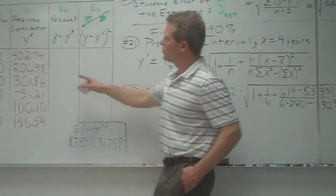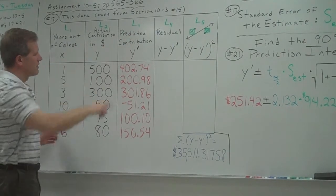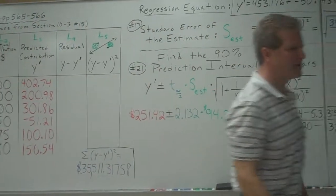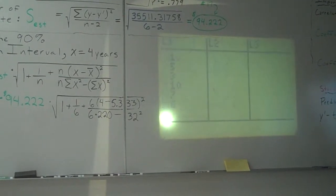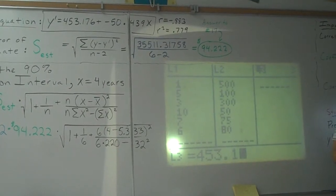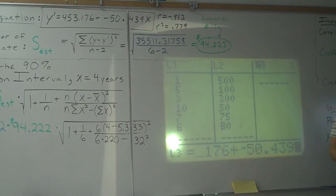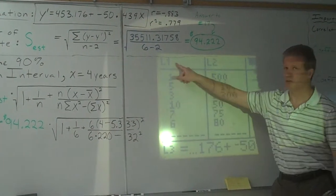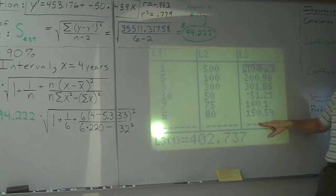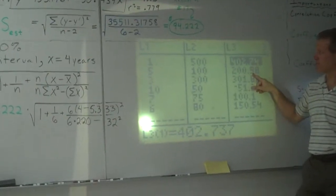Okay, once you get that value, what you want to do is you want to know what values the equation predicts people should give. So I could plug all these x values into that equation up there. I could do it one at a time. I could plug one in for x up in the equation and get 402.74. Then I could plug five in, et cetera. But the lot quicker way to do it is to go to your list, stat enter, go over to list three, and type in the equation. 453.176 plus negative 50.439. Now I don't want to just plug one x in, I want to plug them all in. So all my x's are in list one. So right here I'm going to put L1, second one. So that's all the predicted values. So a person that's been out for five years, it's predicted that person would give $200.98 back to the college. But in actuality, that person only gave $100.